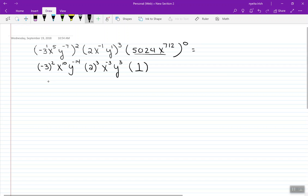I have negative three squared, X to the 10, Y to the minus 14, 2 to the third, which is 8. All of this is multiplied together. X to the minus 3, Y to the 3.